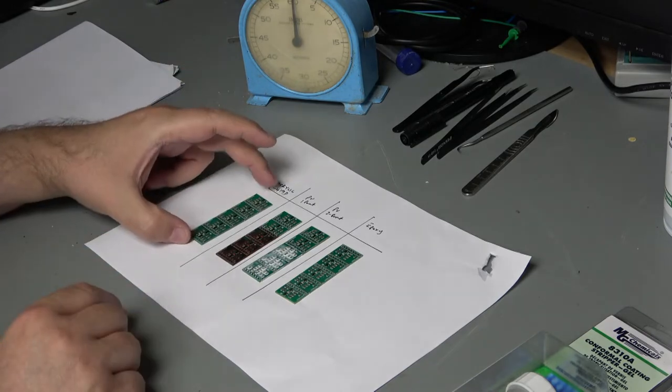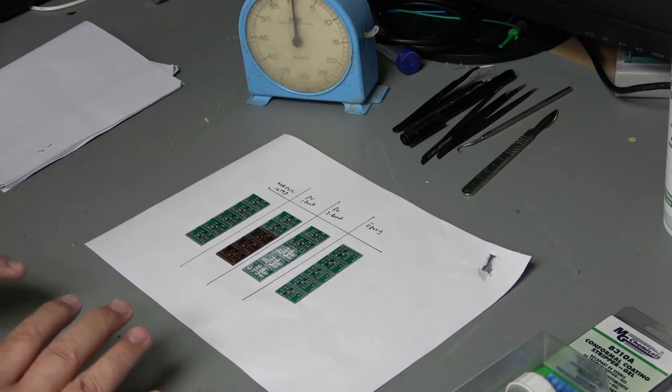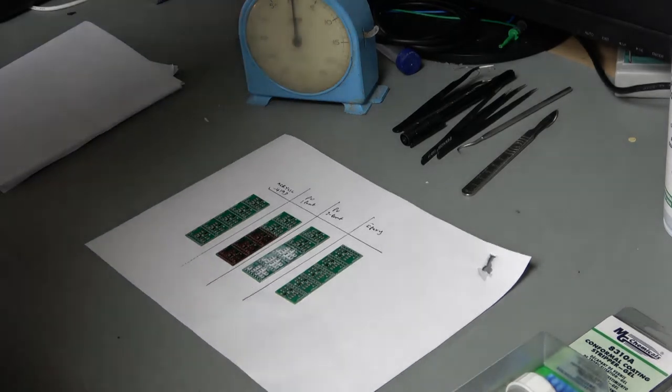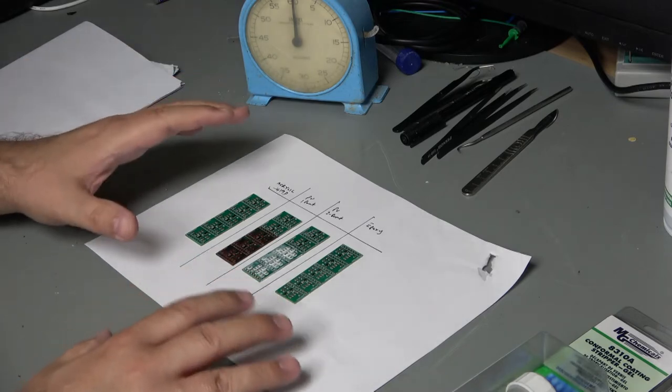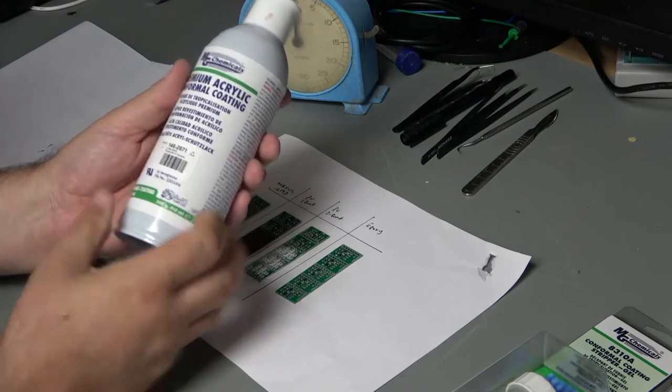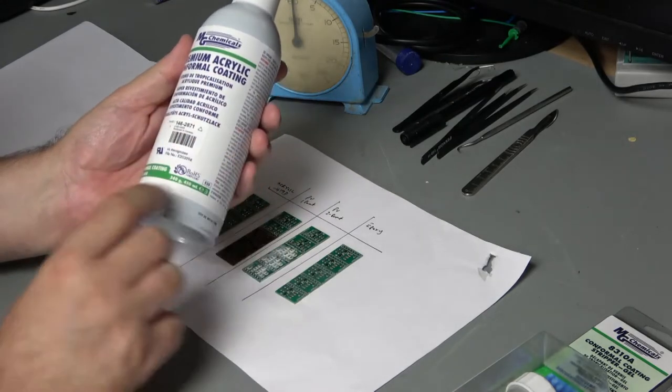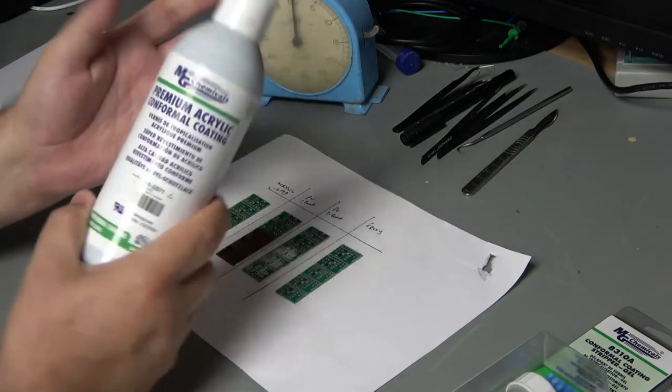Before I give conformal coating a bad name, it can actually be very important and it's essential to electronics in many ways, particularly high voltage for example. And I do indeed use it occasionally. Now the product that I use is this one. It's an acrylic conformal coating from MG Chemicals and it mainly protects against moisture. It is number 419D for those interested.